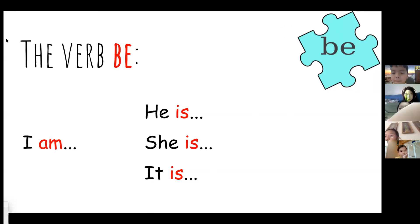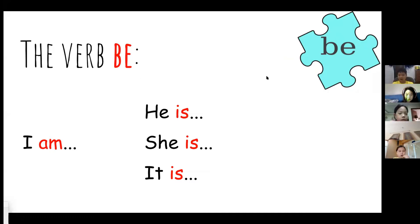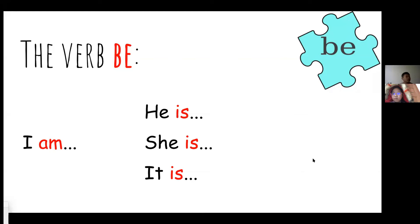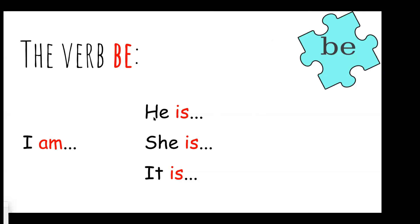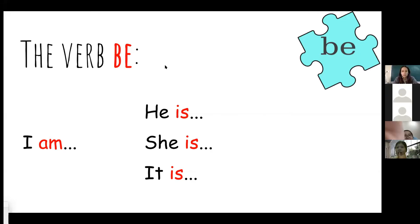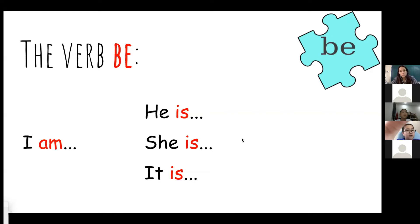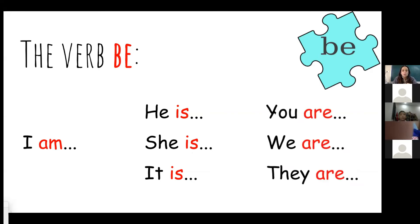When we use he, she, or it, we use the verb 'is.' What about 'are' — which pronouns or subjects do we use with 'are'? We have 'they,' 'we,' and 'you.' So: we are, they are, and you are. Does everyone remember learning about all of these?